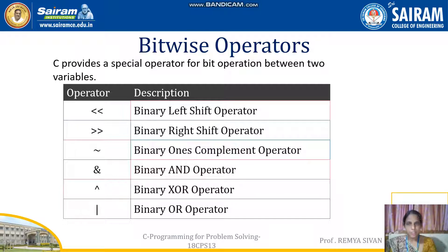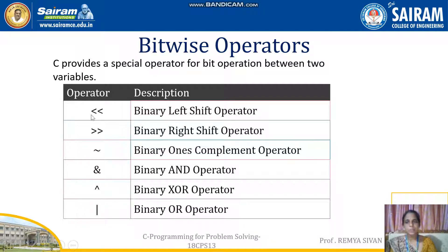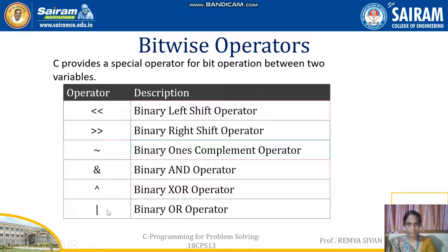The next operators are bitwise operators. C provides special bitwise operators for bit operations between two variables: left shift, right shift, complement, binary AND, binary XOR, and binary OR operators.